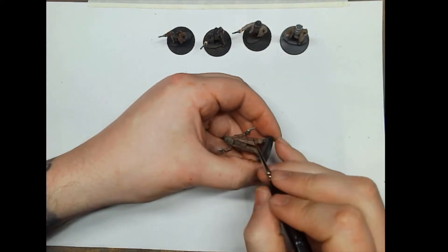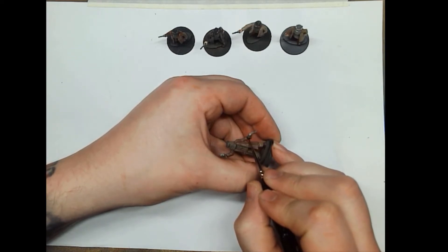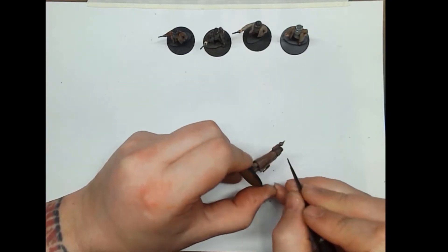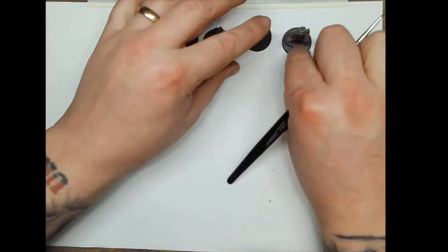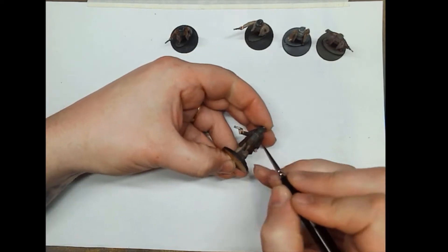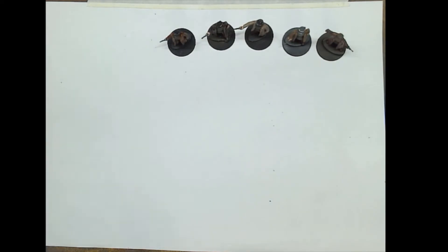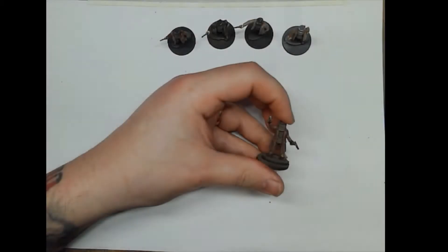We're now for some Abaddon Black just for the handles of the pistols. Next up is the Nuln Oil, just going to use this over the Leadbelcher to take the shine off the pistols.